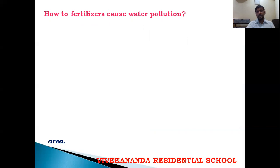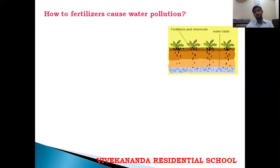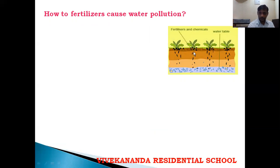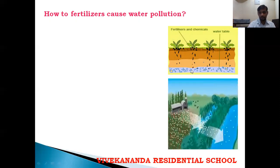Next question: how do fertilizers cause water pollution? When we add chemicals and pesticides to plants and water them, the fertilizers dissolve in water and slowly seep into the soil. When rain falls on that soil, this water again seeps in and mixes with the water table. In this way the water is polluted.